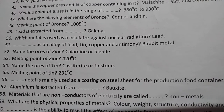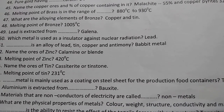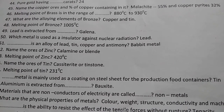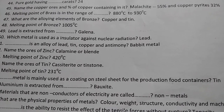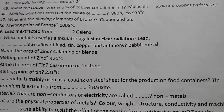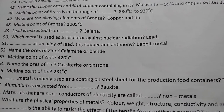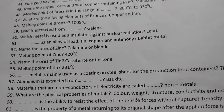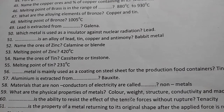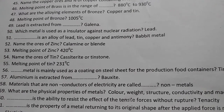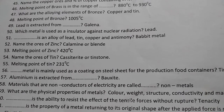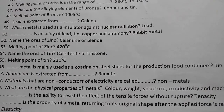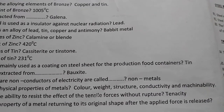Tin is mainly used as a coating on steel sheet for the production of food containers. Aluminum is extracted from bauxite. Materials that are non-conductors of electricity are called non-metals. The physical properties of metal are color, weight, structure, conductivity, and machinability.